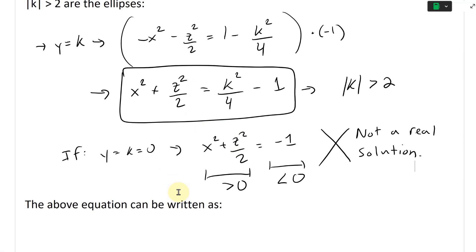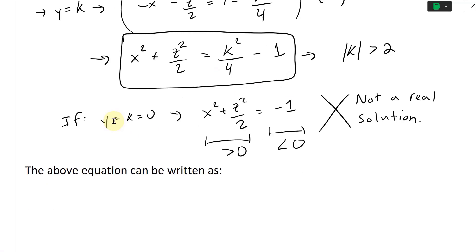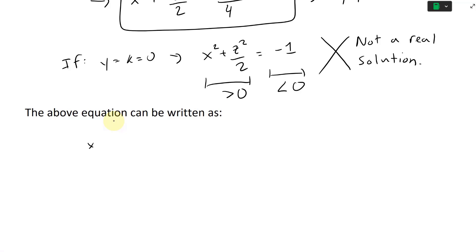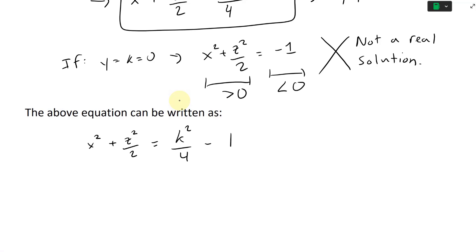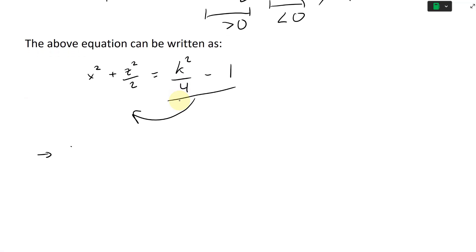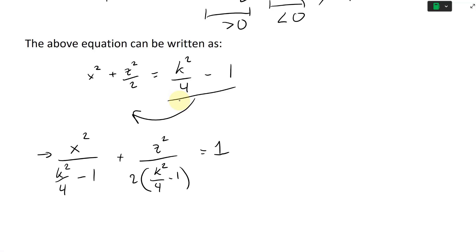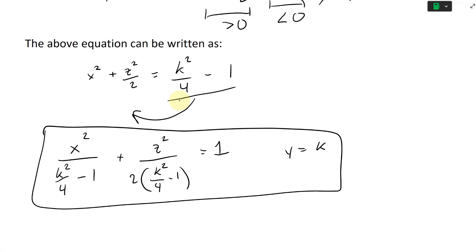The equation x² + z²/2 = k²/4 - 1 can be rewritten in standard ellipse form by dividing both sides by k²/4 - 1, giving: x²/(k²/4 - 1) + z²/(2(k²/4 - 1)) = 1. That's the standard ellipse form for the y = k plane.